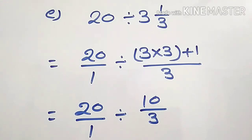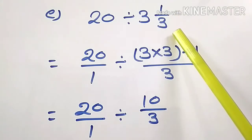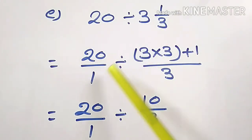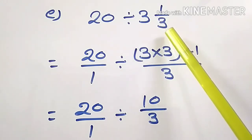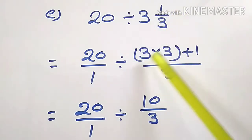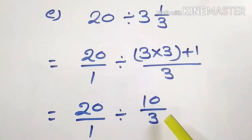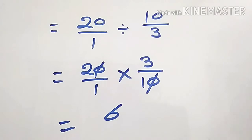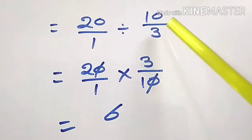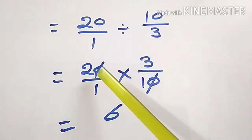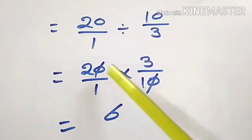Question E: 20 divided by 3 and 1/3. Write 20 as 20/1, and convert the mixed number into improper fraction: whole number part 3 into denominator 3, plus numerator 1 — 3 threes are 9 plus 1 is 10/3. So 20/1 divided by 10/3. Change the sign of division into multiplication and take reciprocal of 10/3, which is 3/10. 20 is a multiple of 10, so divide 20 by 10 to get 2. 2 into 3 is 6. So 6 is the quotient.